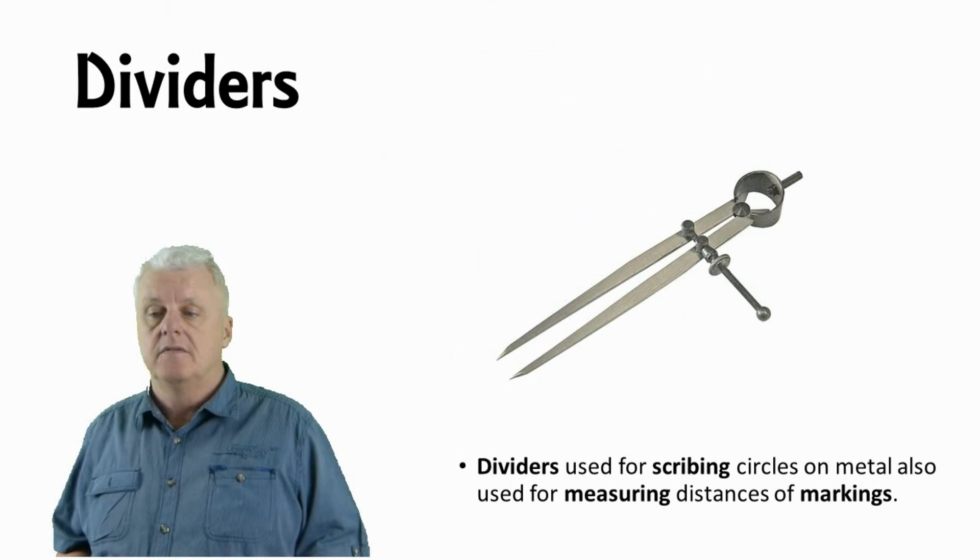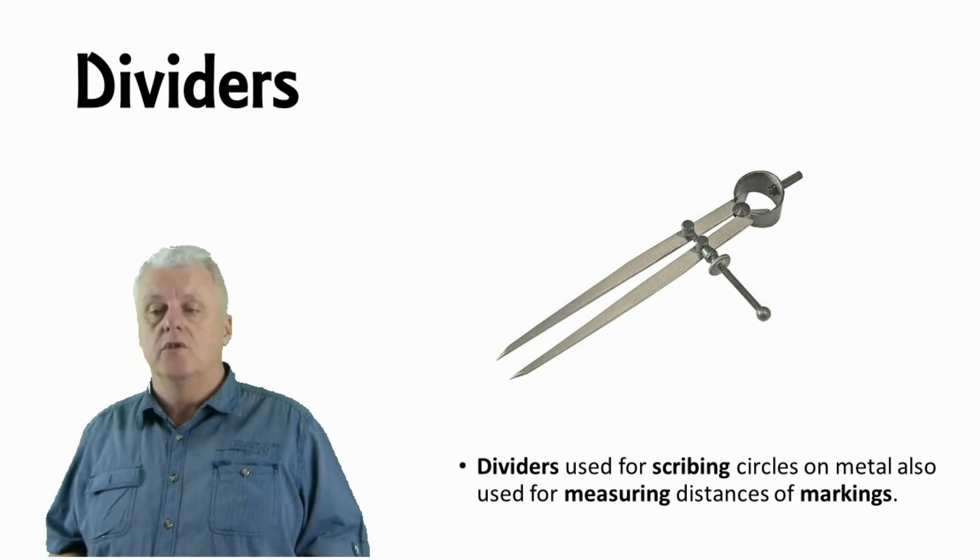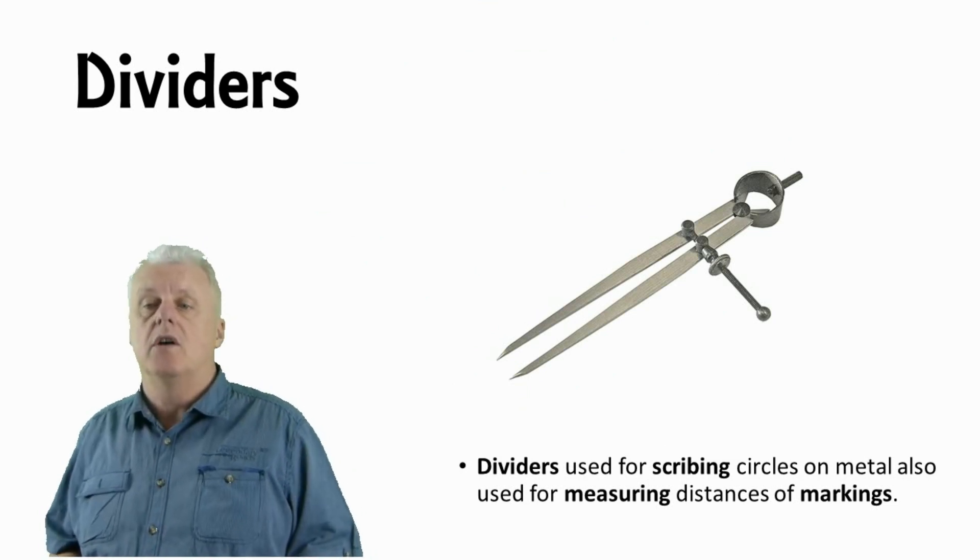Dividers. Dividers are used for scribing circles on metal, also used for measuring distances of markings.